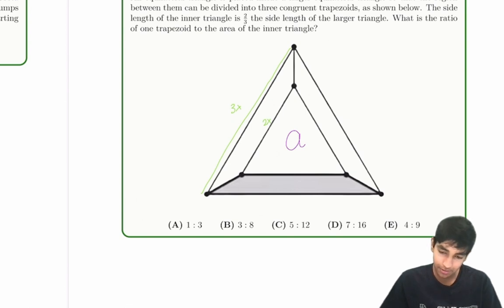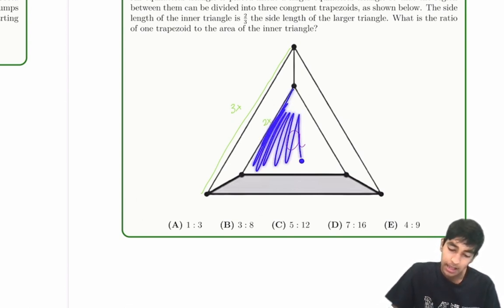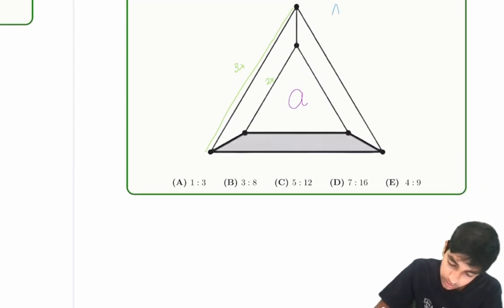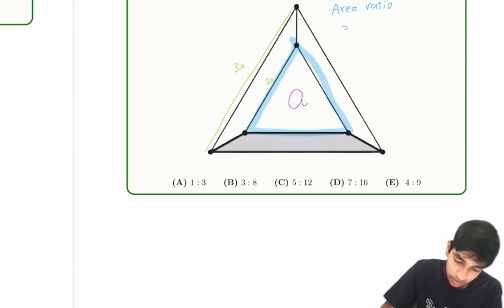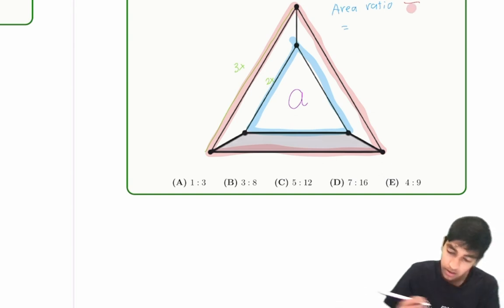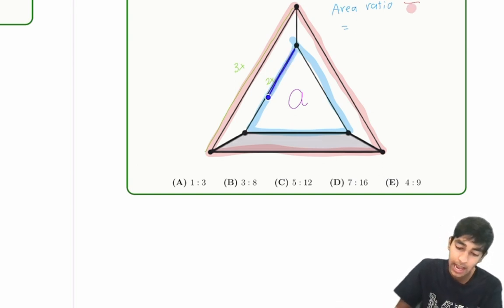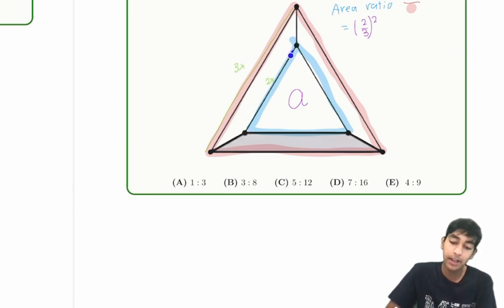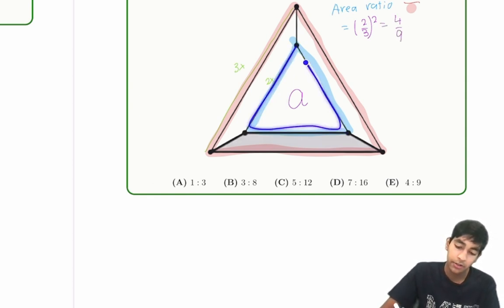The area ratio is the side length ratio squared. So the area ratio between the blue triangle and the red triangle — blue over red — is just the side length ratio squared. The ratio of the side of this triangle to this triangle is two-thirds, so it's (2/3) squared because it's the area, and that's side length squared. This gives four-ninths. So the ratio of the area of the blue triangle to the red triangle is four-ninths.